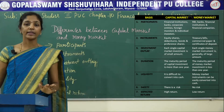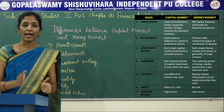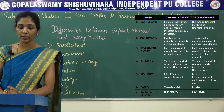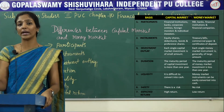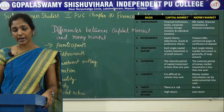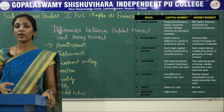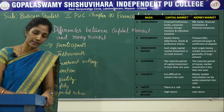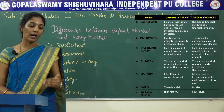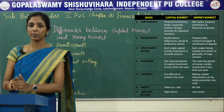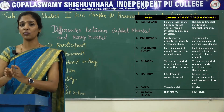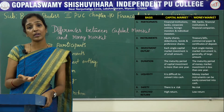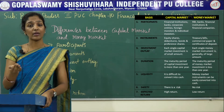The next difference is maturity period. The capital market deals with instruments whose maturity period is more than one year. But in the money market, the maturity period of instruments is less than one year.